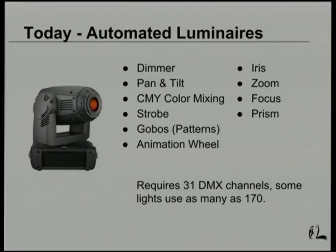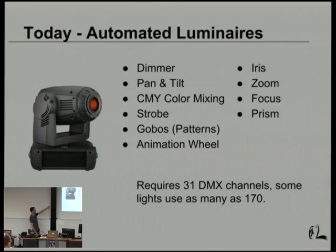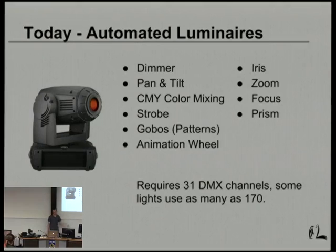That worked well when DMX was created because everyone thought no one would have more than 512 channels. But lighting designers kept wanting more, and technology kept advancing. This is a mid-range automated light, the MAC 700. You can vary its attributes: pan and tilt, CMY color mixing for any color you want, strobes, animation wheels for wave or flame effects, iris, zoom, focus, and prism. This mid-range fixture takes 31 DMX channels to control. Some high-end lights take over 170 — the most I've seen is about 210. So we've gone from analog where you ran one conductor per light, to digital, and now we're back to the same problem where you may get only a couple of these per DMX universe before you're back to running cables per light.